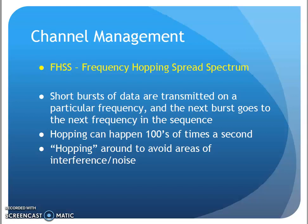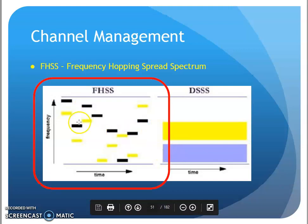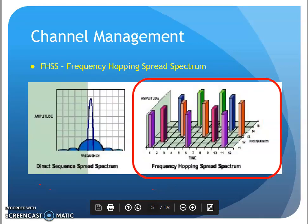This can happen hundreds of times a second. The idea is that if there is any interference or noise, as it's hopping, it will hopefully be hopping around that interference. If it does hop into interference, it's only for a short burst of time, and the receiver would ask for any missing pieces. So frequency hopping spread spectrum sends a burst, jumps, bursts, jumps — hopefully avoiding spots of interference.